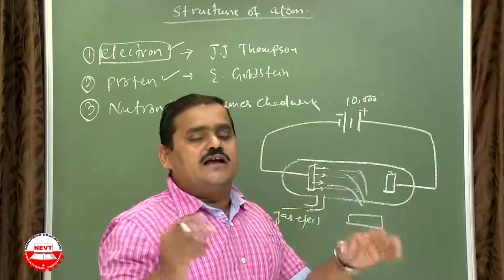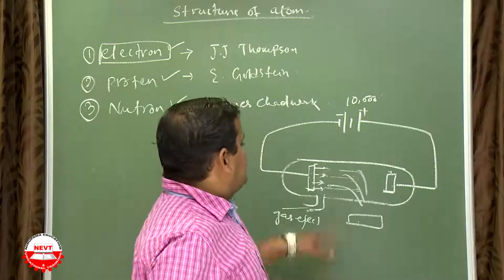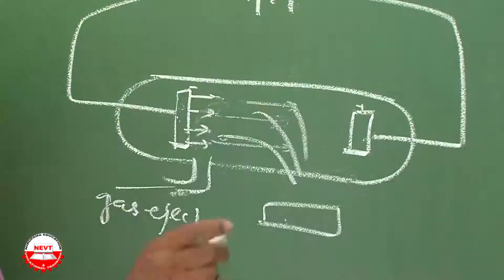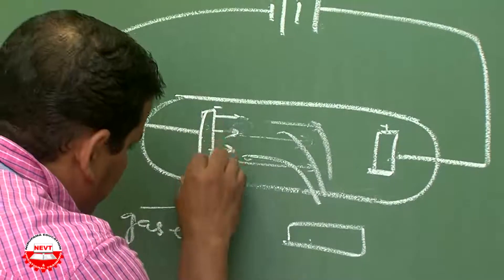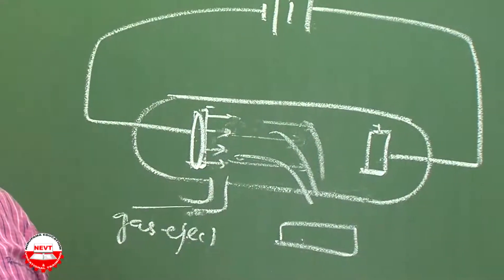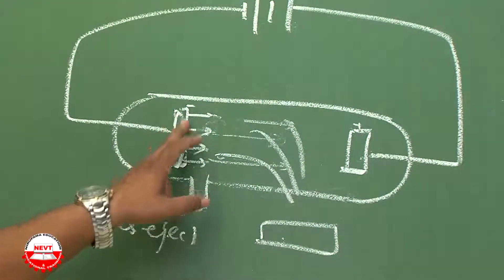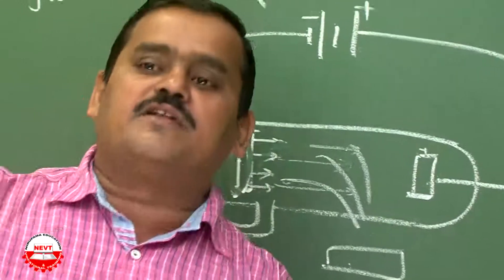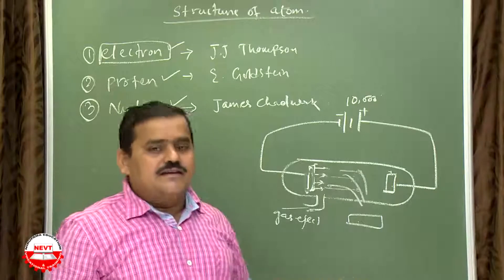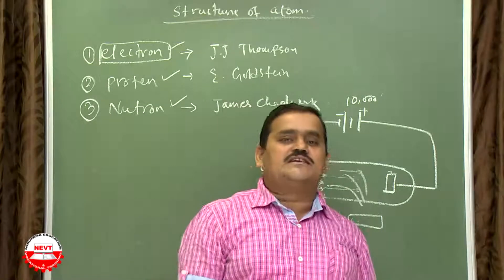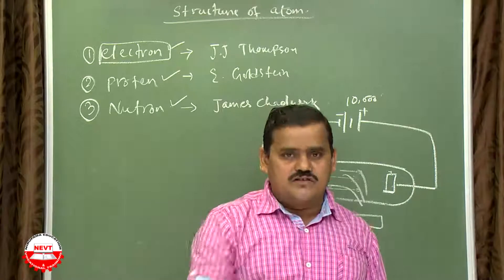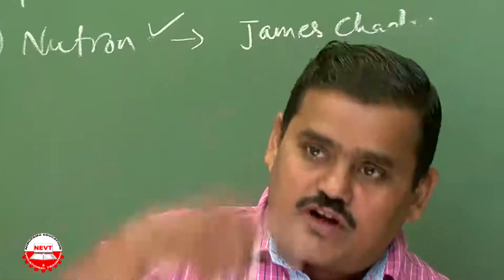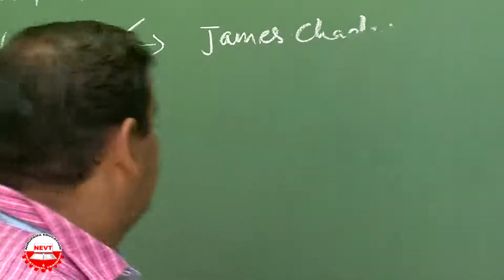These rays also produce a shadow when any obstacle is placed in their path. Importantly, if you change the cathode material — using various metals or non-metals — you will notice the same scintillation, meaning the same rays are produced. This means each and every substance consists of electrons. This is how the electron was discovered through the cathode ray experiment.